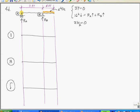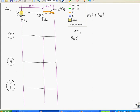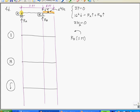So let's do R sub B first. If I look at R sub B in comparison to point A, I see that that will cause a counterclockwise rotation. So counterclockwise rotation is equal to R sub B times the distance between point A and R sub B. That's 11 feet.